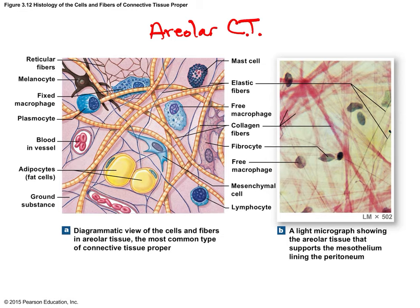Collagen is the biggest bundle of protein fibers — it is the strongest and thickest. It's very flexible and provides bulk, strength, and resiliency to the tissue. Elastin, also called elastic fibers, is very different from collagen.